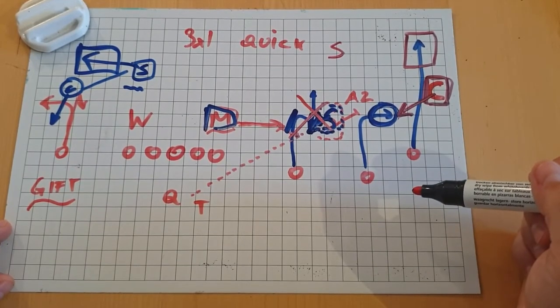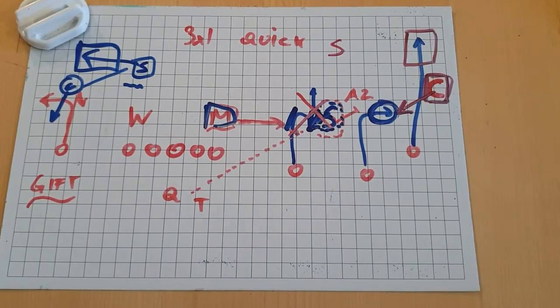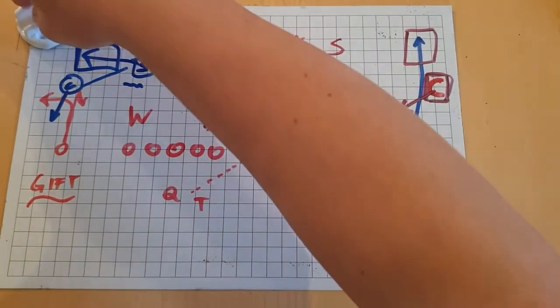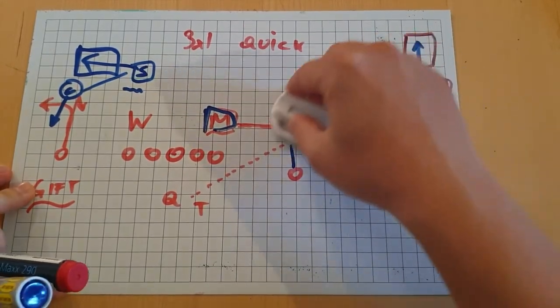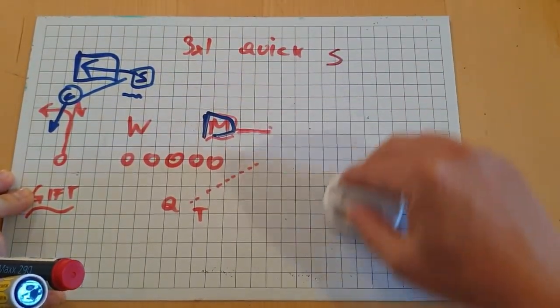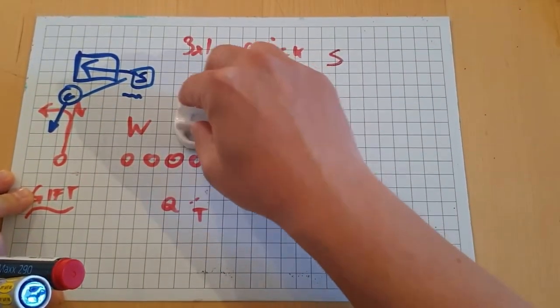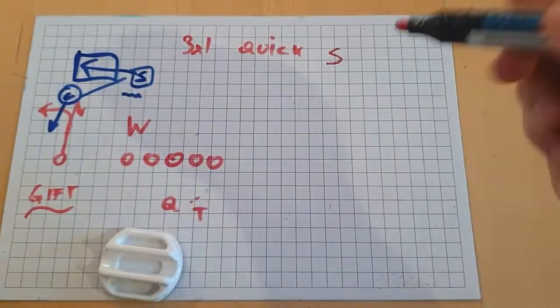So one answer could be, if the defense is hugging up number three very aggressively, to change these routes up. And you will see here with another concept that works great, maybe as an answer to this.